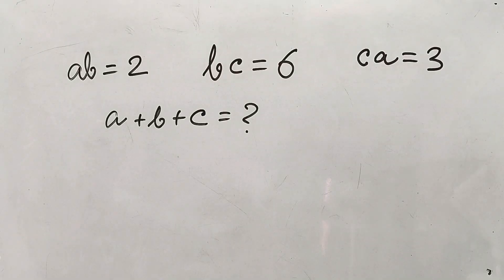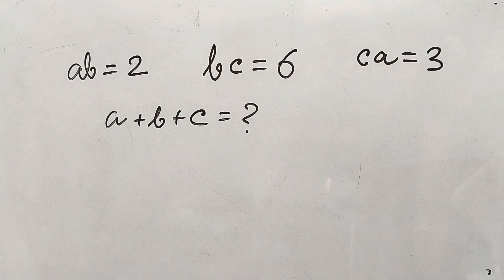Hi guys, this is Aritam, you're watching Brain Development. AB is equal to 2, BC is equal to 6, CA is equal to 3. What is the value of A plus B plus C?